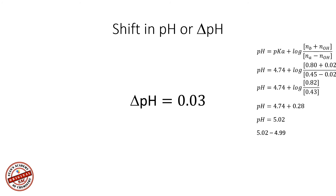When 0.02 moles of sodium hydroxide was added into the buffer solution with a pH of 4.99, the pH only increased by 0.03 units — a very small increase. By contrast, if you dissolved 0.02 moles of sodium hydroxide in pure water, the pH would increase tremendously. This demonstrates that the solution is indeed a buffer. In a similar way, you can calculate the shift in pH when a few moles of acid is added by making appropriate changes to the Henderson-Hasselbalch equation.